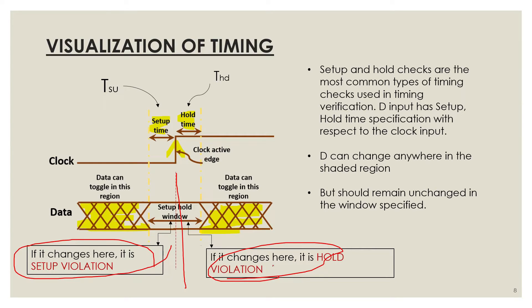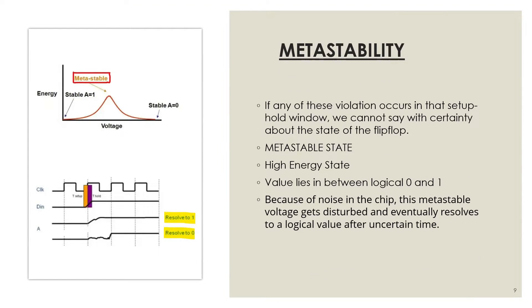So, if any of these two violations occur, it is said to have a timing violation. Due to any reason, if the data changes in this setup-hold window, it is a timing violation. In any of these cases, we cannot predict the value of the output, and the output reaches a special state called metastable state, or metastability.